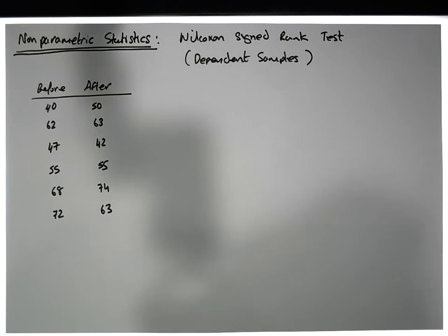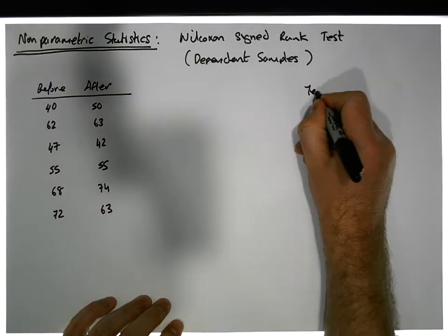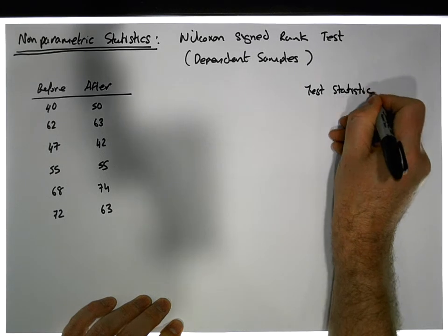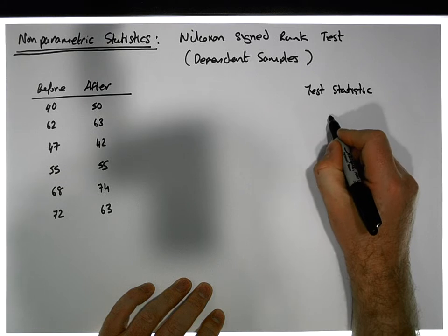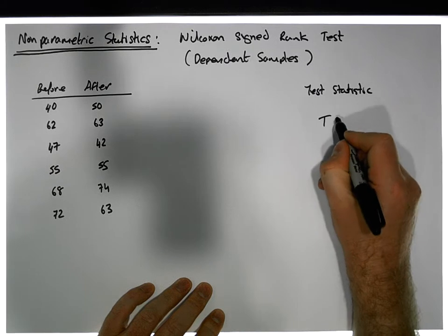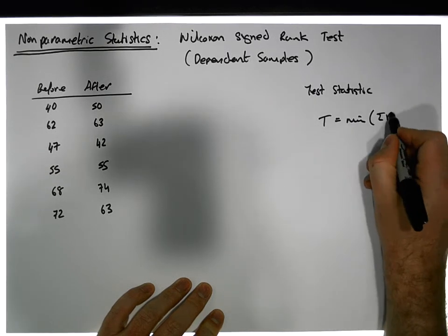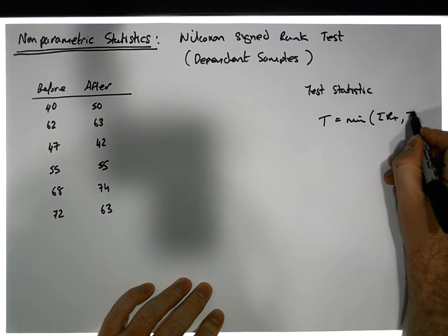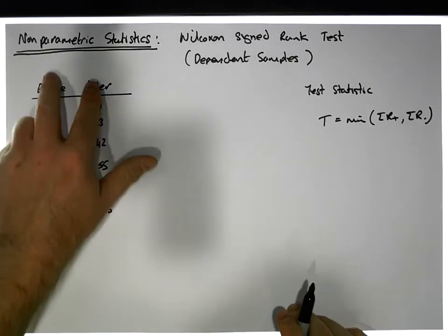What we need to do is rank the data, but first we need to define the test statistic. The Wilcoxon signed rank test statistic is called T, and it's basically equal to the minimum of the sum of the positive ranks compared to the sum of the negative ranks — because what we're going to do is get the differences between the before and after.